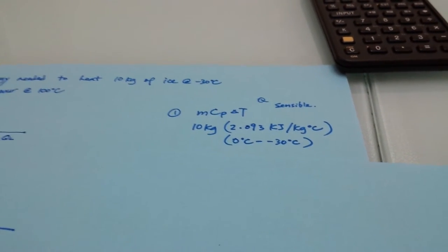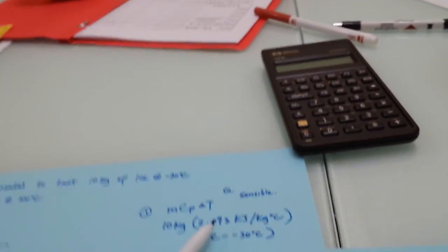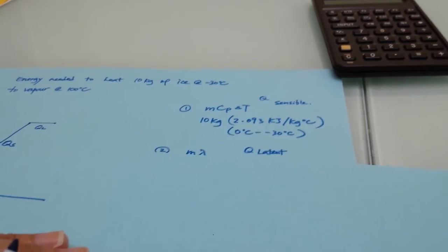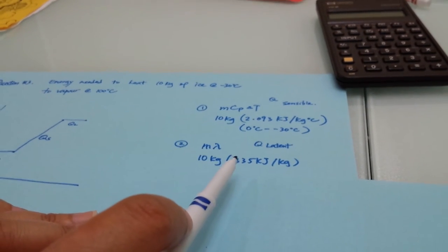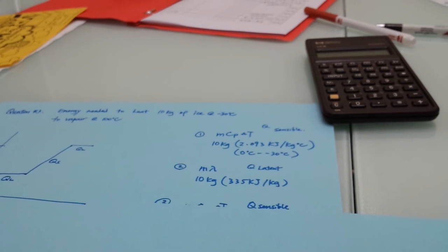Heating capacity, remember that we are using 2.093 now, kilojoules per kilogram degree Celsius, because we are talking about ice here. And then latent heat energy for ice, turning from ice to water, is 335 kilojoules per kilogram.